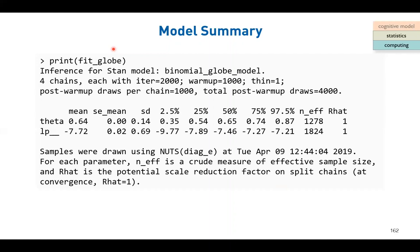We can print the results of the model. When we print the fit object, STAN returns what we have done: the name of the model, how many MCMC chains we used, how many samples per chain, and how many of the samples are for internal algorithm tuning. In this case, half.